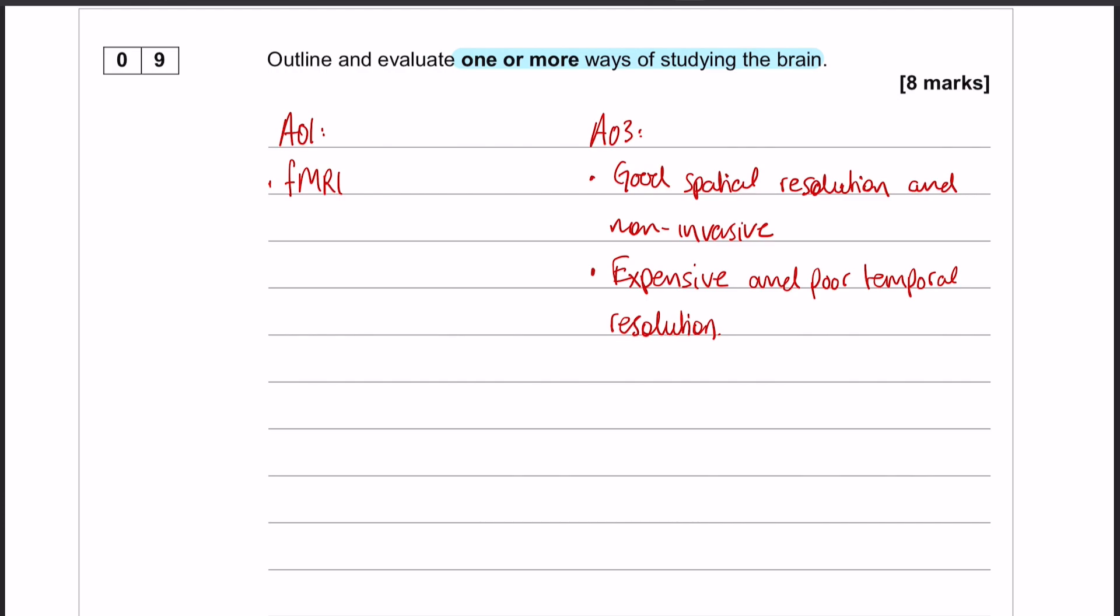It's not a trick question. People often think that it is. You can get the full eight marks by just talking about one way. It just depends on how you prefer to do it. If you have one way of studying the brain...